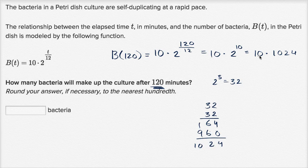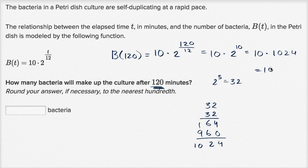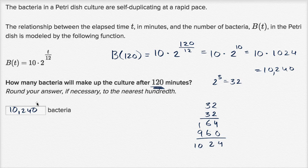So this is gonna be 1024. 10 times that is going to be equal to 1024 zero, so 10,240 bacteria. And we're done.